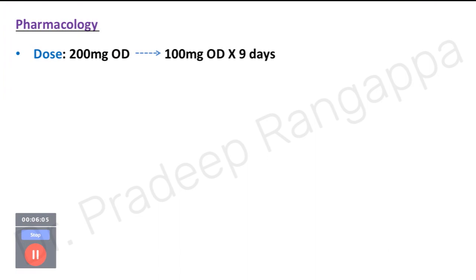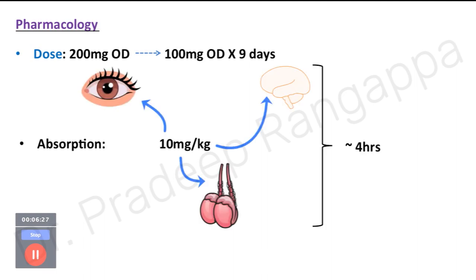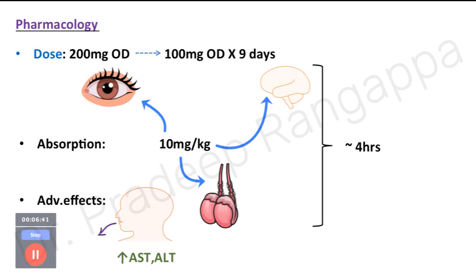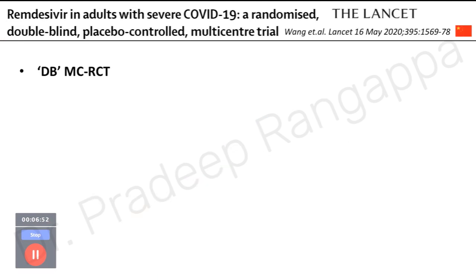That video demonstrates how the prodrug remdesivir gets embedded into the RNA sequencing and prevents further replication. The dosage of remdesivir is 200 mg as a bolus dose followed by 100 mg once a day for nine days, given as an infusion over 2 hours. At a dose of 10 mg/kg, remdesivir gets absorbed into the brain, eyes, and testes within 4 hours. Adverse effects are mild: nausea, vomiting, and transaminitis — with raised AST and ALT levels being distinctive.